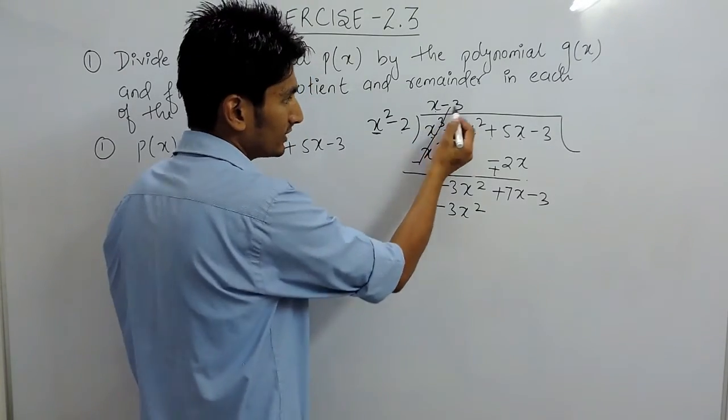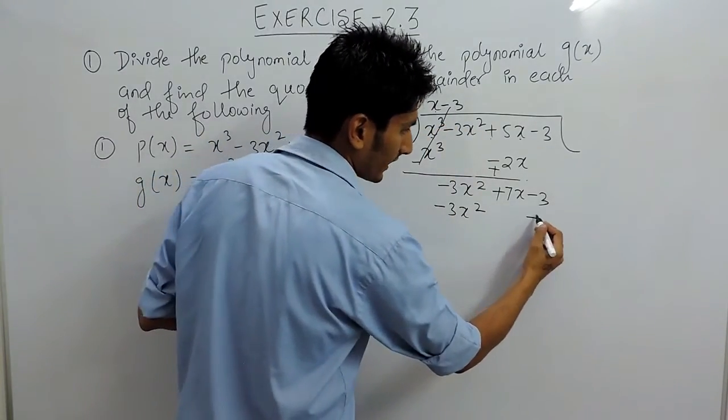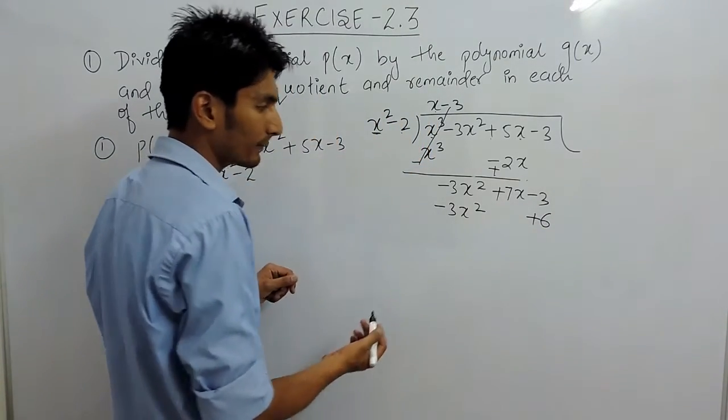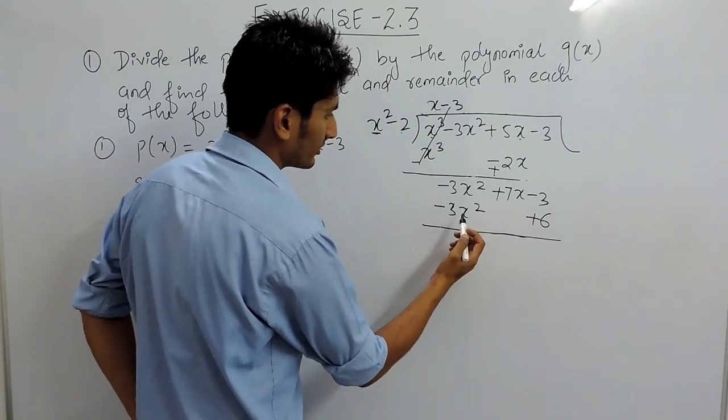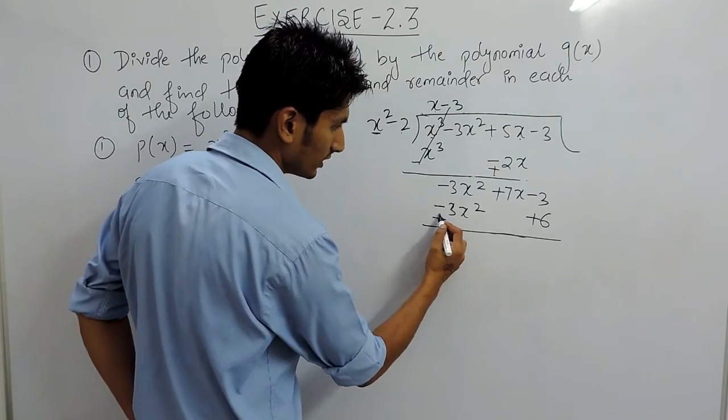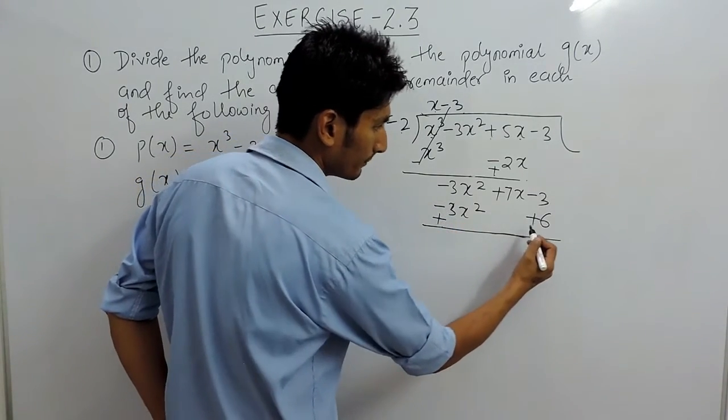After that, you have to multiply minus 3 by minus 2, which will give positive 6, and that should be written below the constant term. Again you have to subtract.